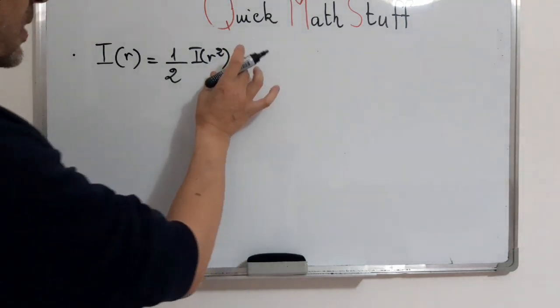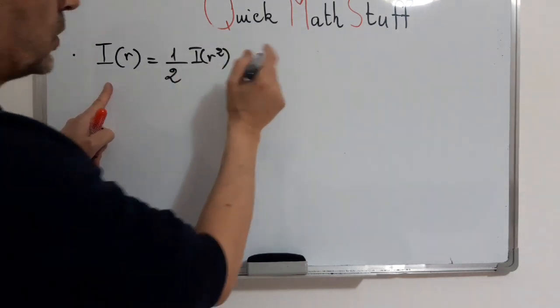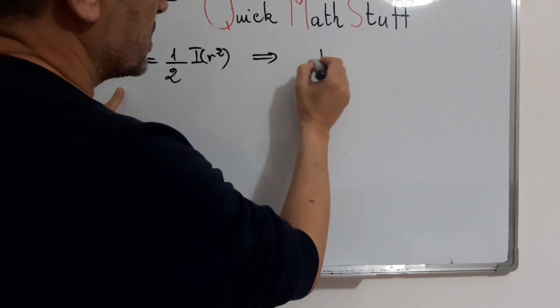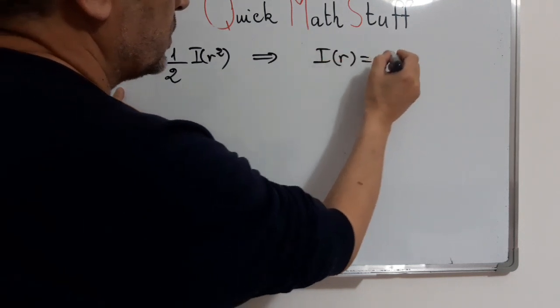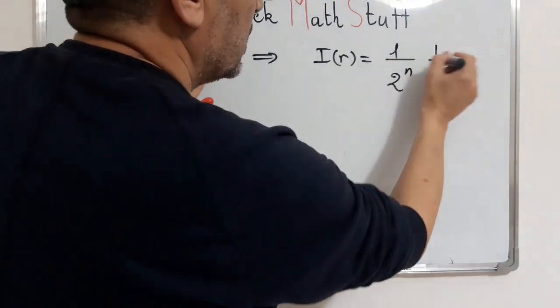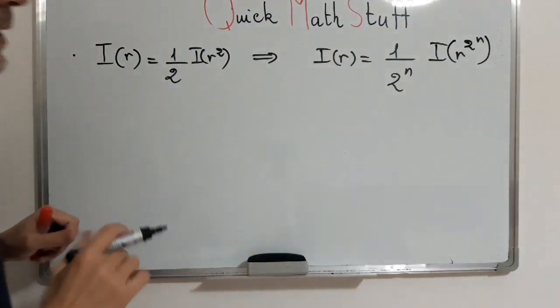Now it's easy to obtain from this functional equation the following result. By induction, an easy induction gives that I of r will be equal to 1 over 2 to the n times I of r to the power 2 to the n.